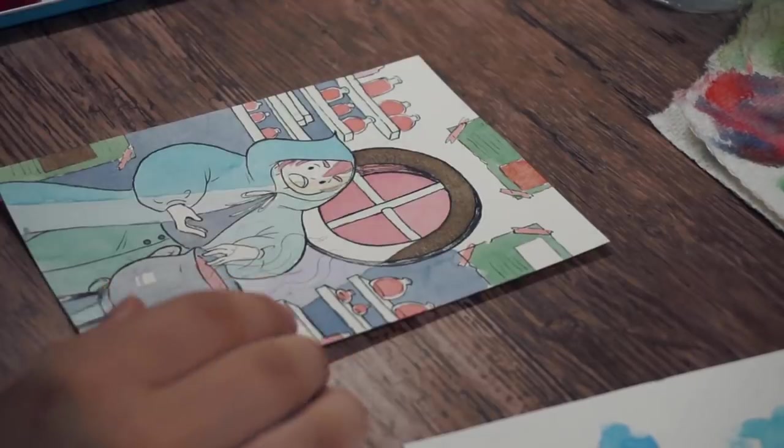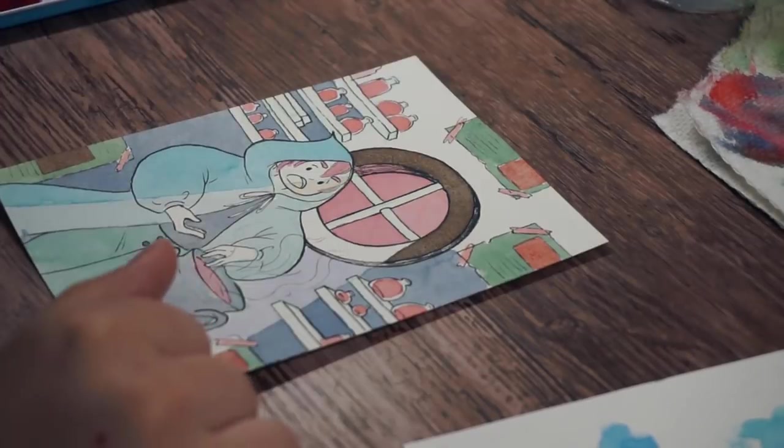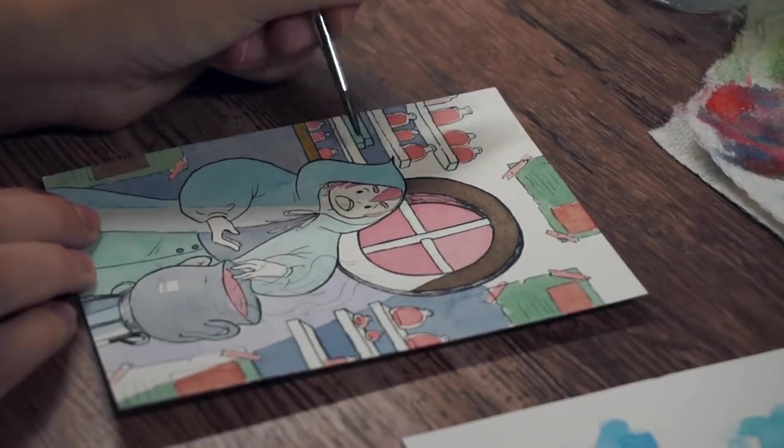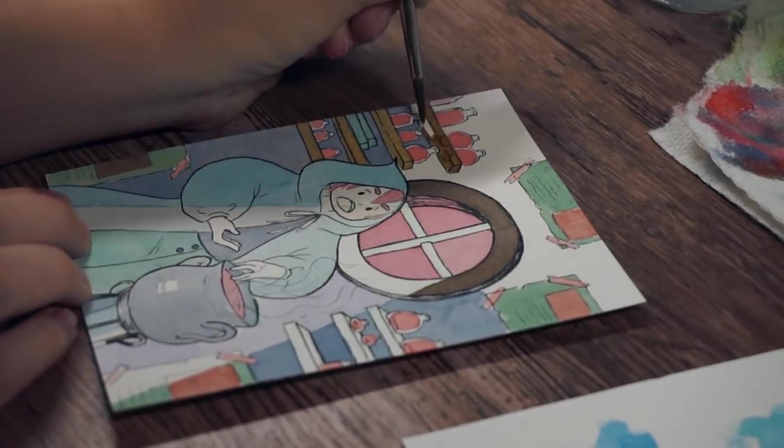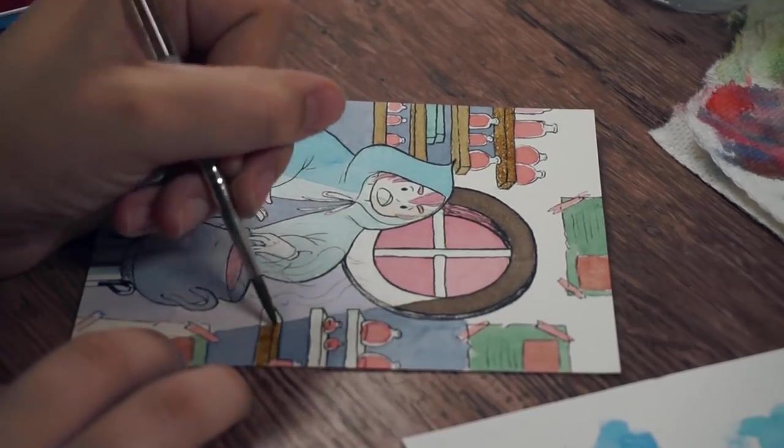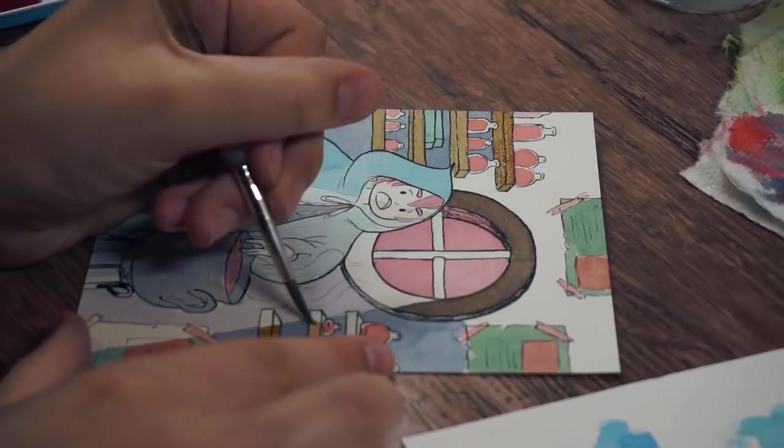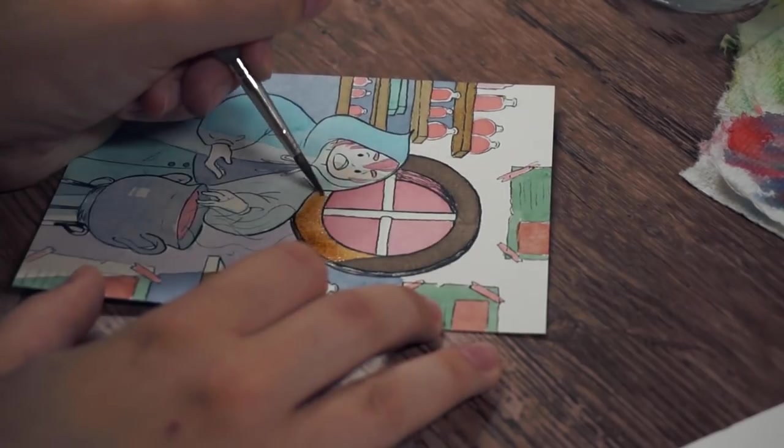But the thing about this watercolor paper that I'm using is that once you put the colors down they don't budge, they don't move at all. So I might want to try using something else because if you make a mistake you can't get it off the paper—it's so difficult. It's Bee watercolor paper; it might not be the highest quality one.